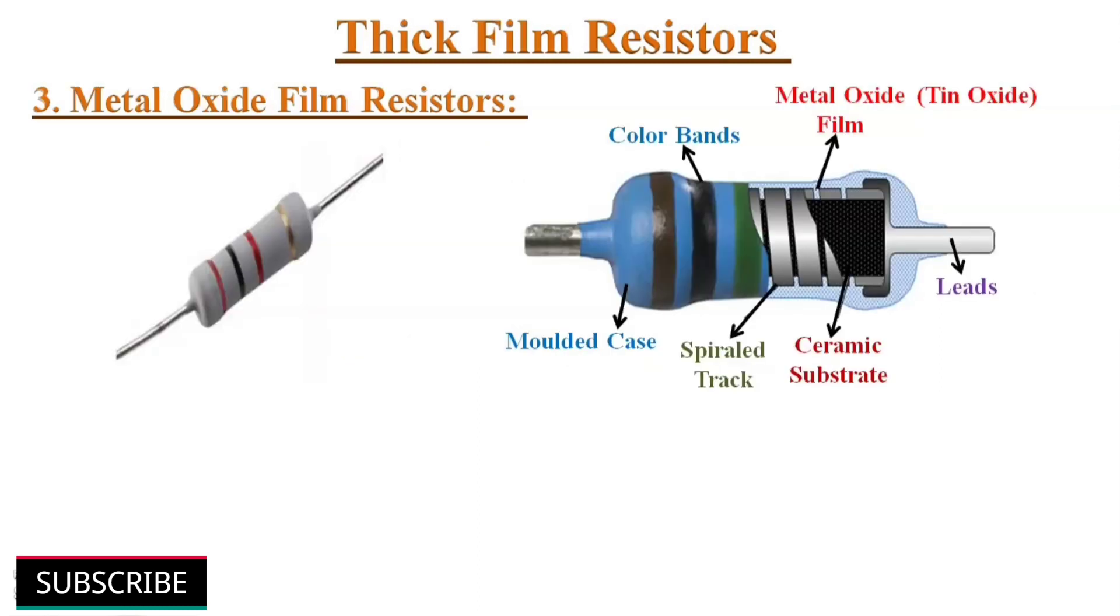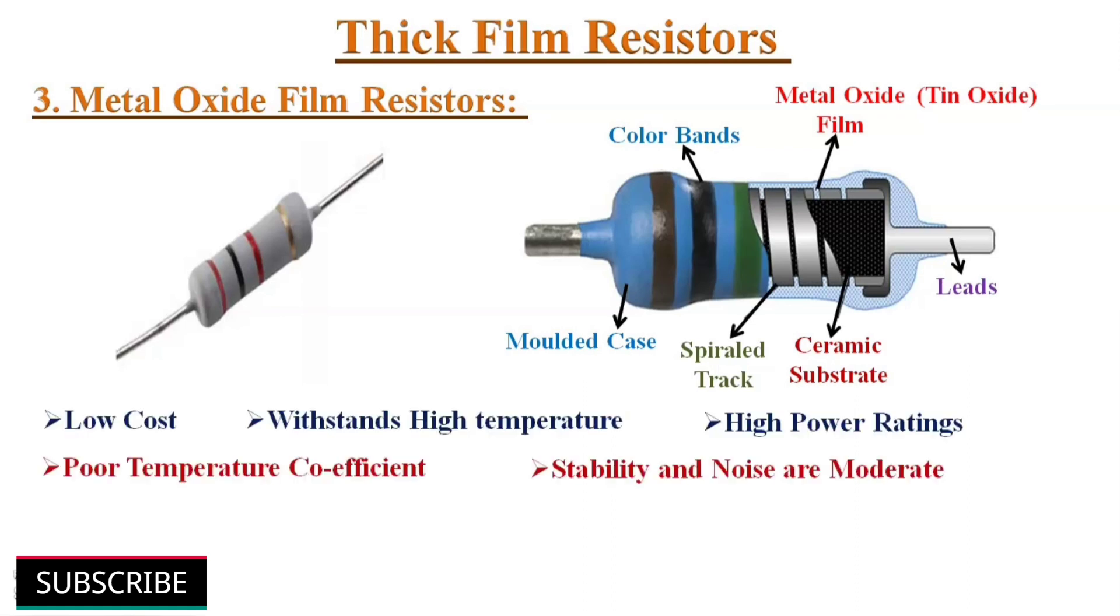Another type of thick film resistors is metal oxide film resistors. These type of resistors are formed by oxidizing a thick film of tin chloride on a ceramic substrate. These resistors are available at low cost, can withstand high temperatures, can be used at high voltages. But on the other hand, they have poor temperature coefficient. If we compare them with other resistors, they offer moderate stability and noise.